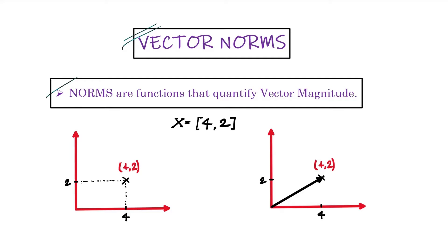Let's start by the definition: norms are functions that quantify vector magnitude. Consider the example of this vector x, which has two elements. In the previous lecture, we saw how a vector represents a point in a two-dimensional space. So this vector right here is actually representing this point within this two-dimensional area.